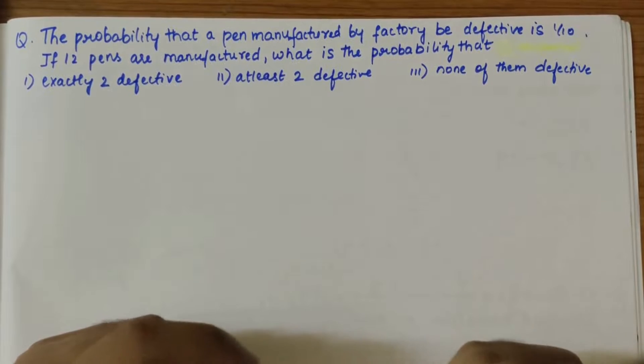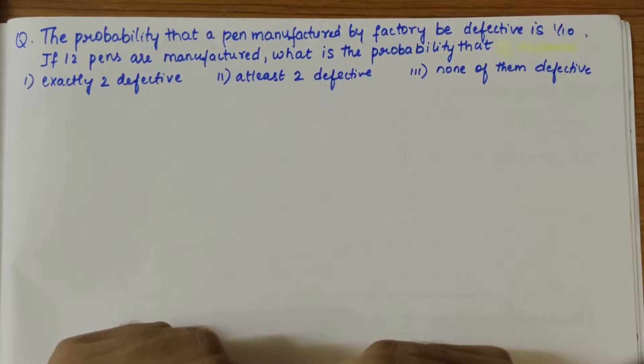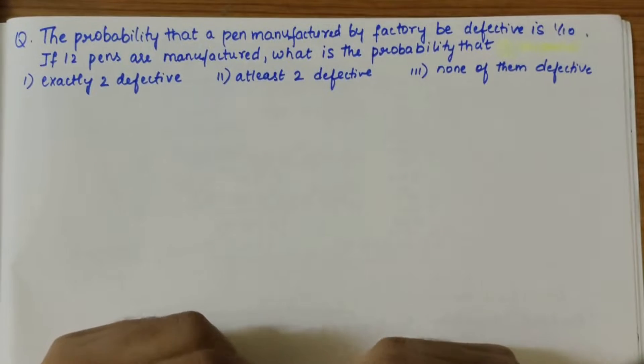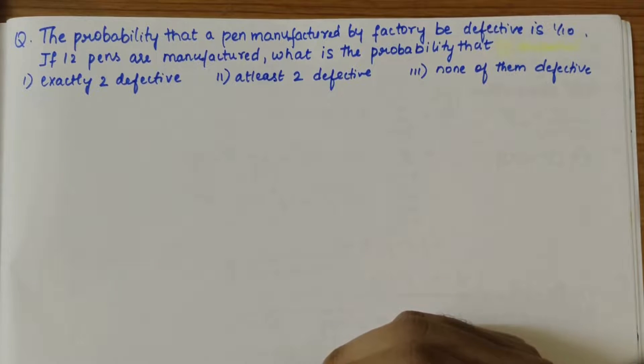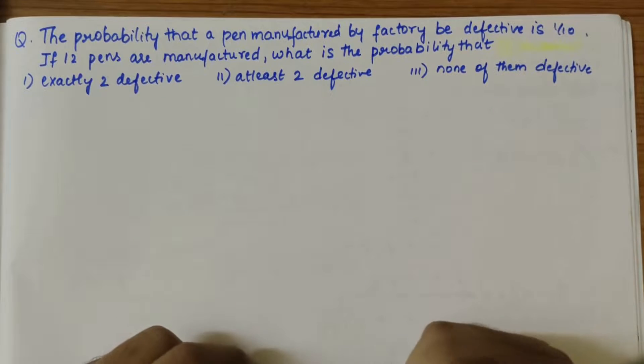In this video we'll be solving a numerical based on the binomial distribution topic. The problem statement is as follows: the probability that a pen manufactured by a factory is found to be defective is 1/10. If 12 pens are manufactured, what is the probability that exactly two are defective, at least two are defective, or none of them are defective?